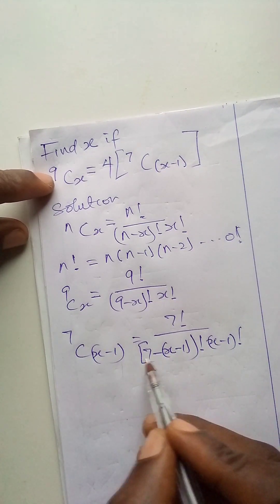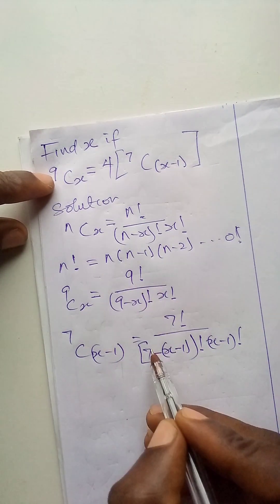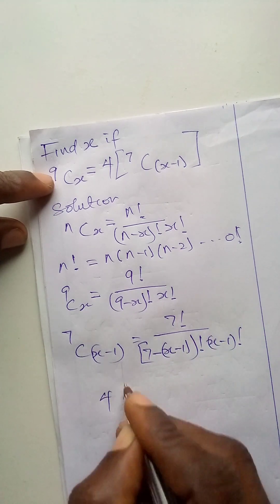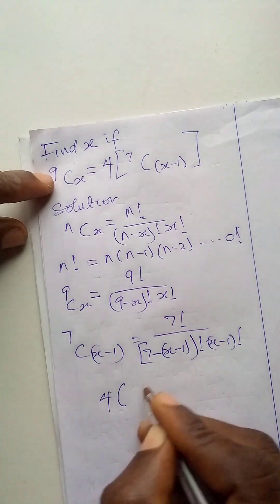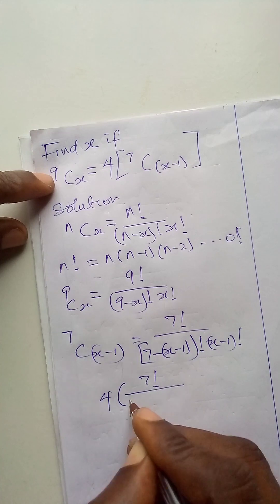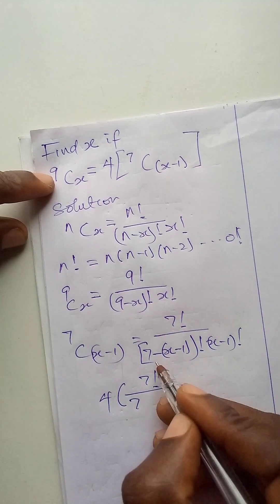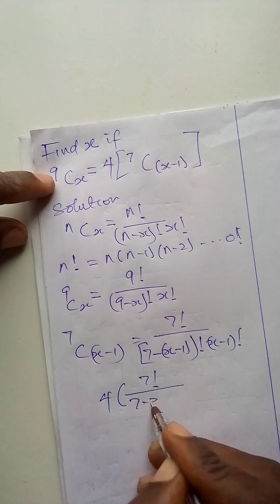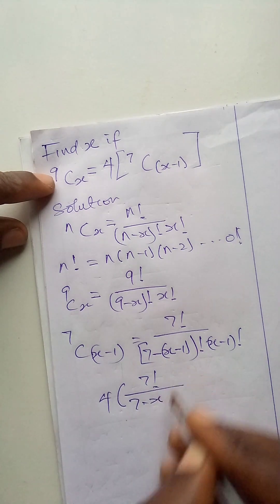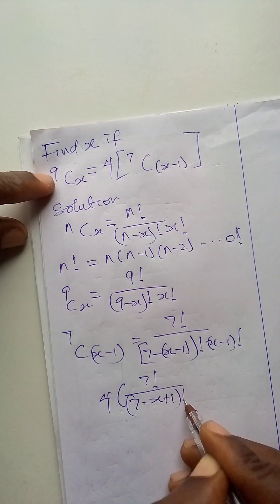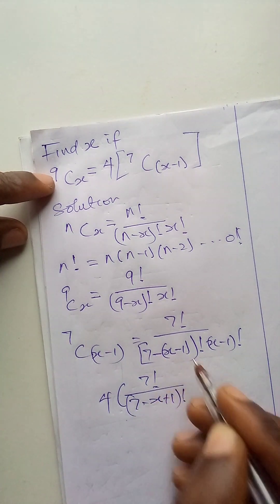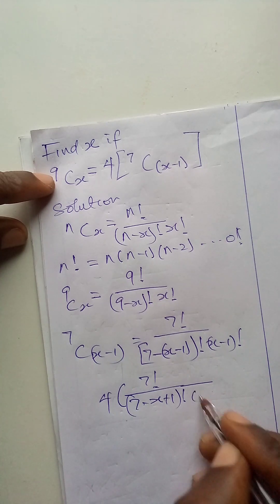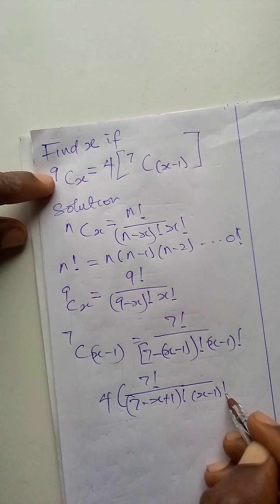We will now equate this side and this side. But first, let us multiply the right side by 4. That is 4 bracket 7 factorial over 7 minus x plus 1 factorial, because we are opening the inner bracket, all over x minus 1 factorial.